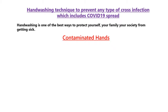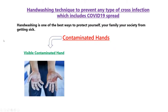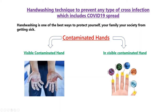These contaminated hands we can separate into two: one is visibly contaminated hand and another one is invisibly contaminated hand. Visibly contaminated hand means there are some visible particles on our hands that need to be removed. Invisibly contaminated hand means through our eyes no particles are visible, but if you see through a microscope there will be microorganisms present in our hand.